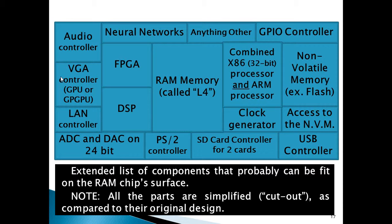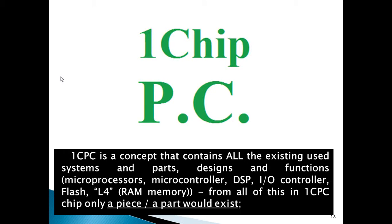Please note: all the parts are simplified, or cut down, as compared to their original design. It's not the original 100% copy-paste system. It needs a little modification, but everything can be integrated in the same piece of silica. One CPC is a concept that contains all the existing used systems and parts, designs and functions: microprocessors, microcontroller, DSP, IO controller, flash, and L4 meaning the RAM memory. From all of this, in a One CPC chip, only a part would exist — not the whole original design.